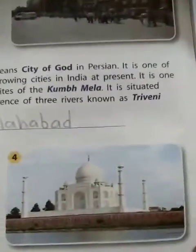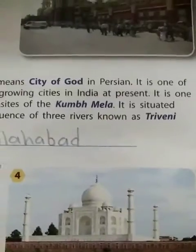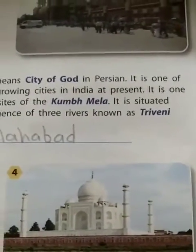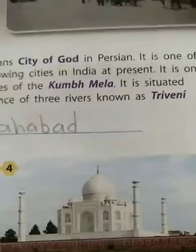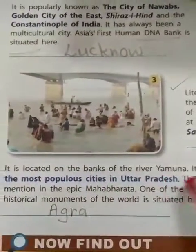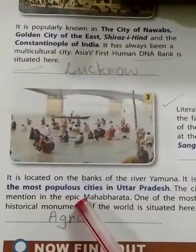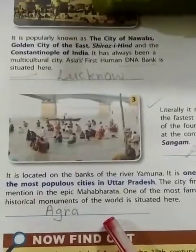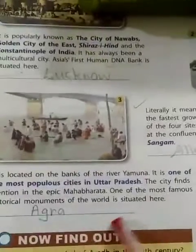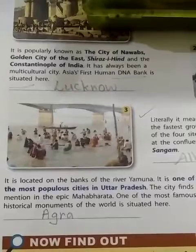The fourth one — identify this picture. I think it is the Taj Mahal. It is located in Agra, on the bank of river Yamuna. It is one of the most populous cities in Uttar Pradesh. The city is mentioned in the epic Mahabharata. One of the most famous historic monuments of the world is situated here.